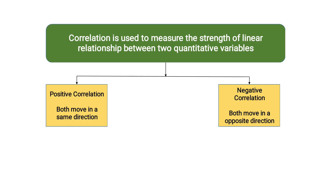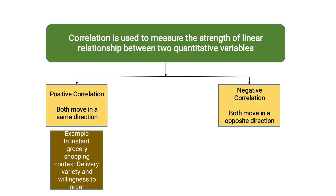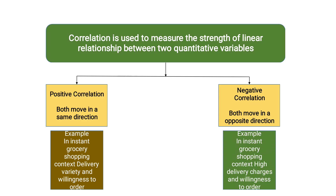Let's understand positive correlation with an example in an instant grocery shopping context. If a particular instant grocery delivery company provides a variety of products, there is a high chance that the customer's willingness to order from that store will be high. So if variety of products increases, the customer's willingness to order increases — that is a positive correlation.